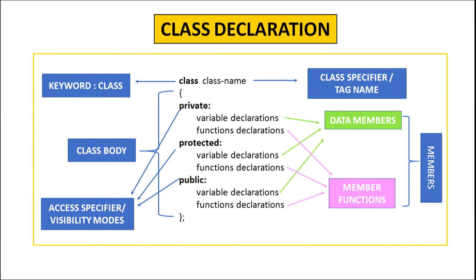The keywords private, protected and public are called the visibility modes or access specifiers. The private and protected keywords specify that all the data members and member functions declared in that section are not visible outside the class — they can only be accessed by the members of the class. However, the data members and member functions declared in the public visibility mode can be accessed outside the class by the object of the class. The only difference between private and protected is that protected members can be inherited while private members cannot.